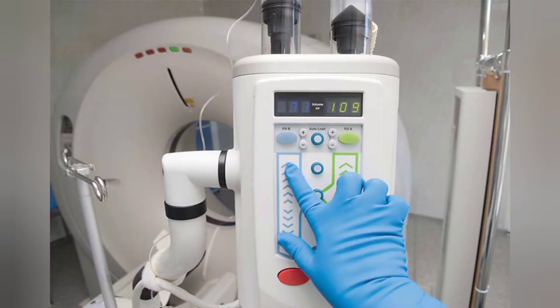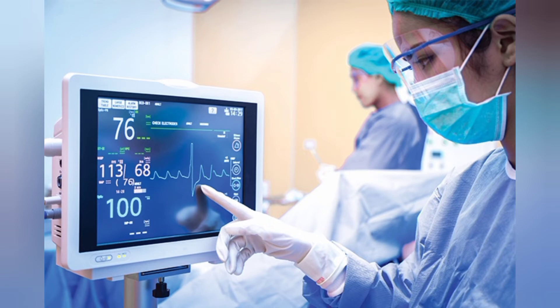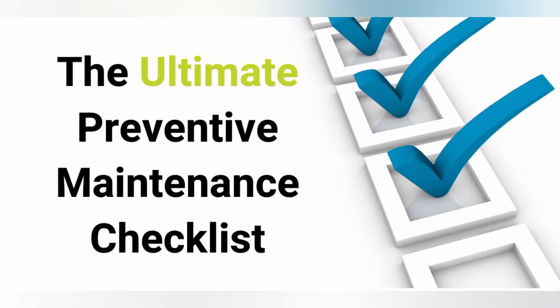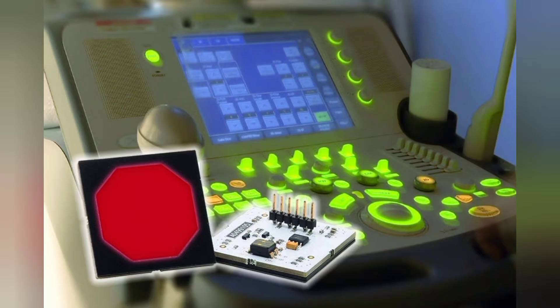Your next step is to switch on the machine or equipment. Once the machine is switched on, check the display — see if the screen is working properly. Moving ahead with these PM steps, tick on the PM checklist. After that, check the functionality of the equipment. Many equipment have their own checklist programmed in the machine — run that checklist test. If it is not available, run the equipment normally. Check if all LEDs and all buttons are working properly.